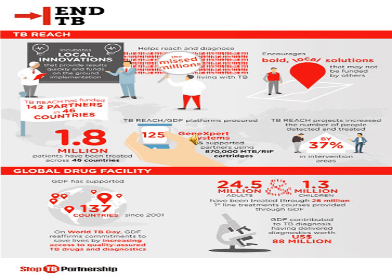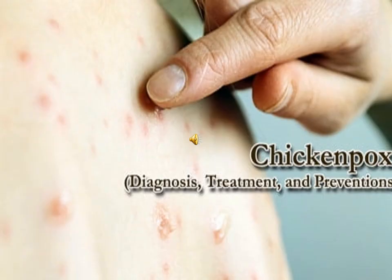The NTB Strategy 2020 aims to make the world free of tuberculosis with zero deaths, disease, and suffering due to TB. Its goal is to end the global tuberculosis epidemic. Its components are integrated patient-centered care and prevention, bold policies and supportive systems, and intensified research and innovation.